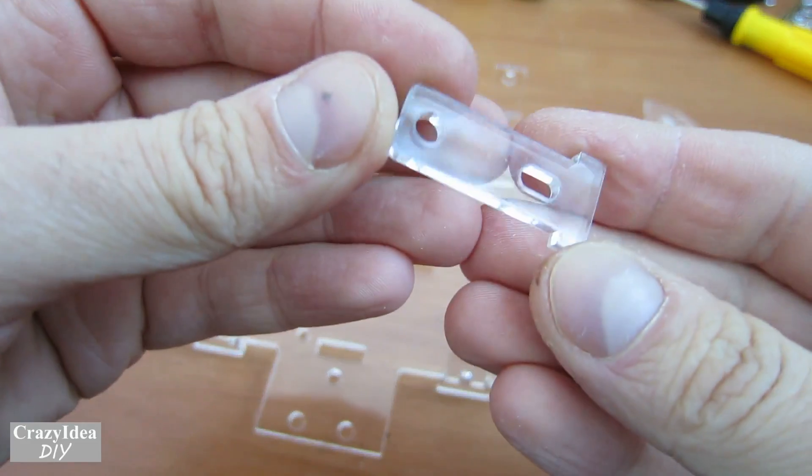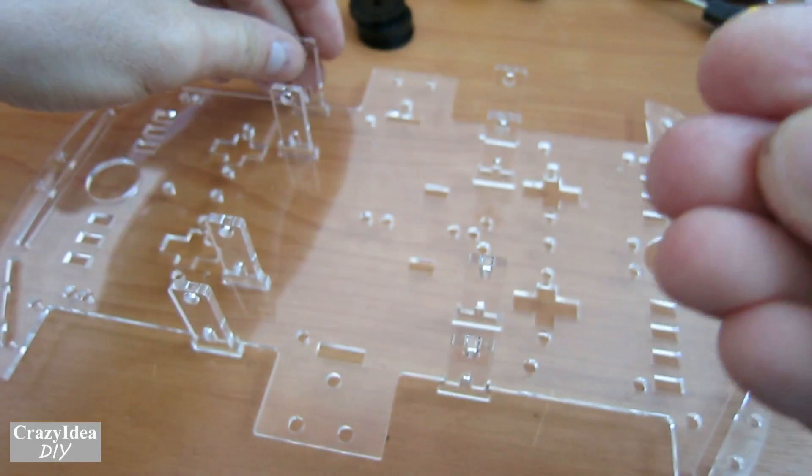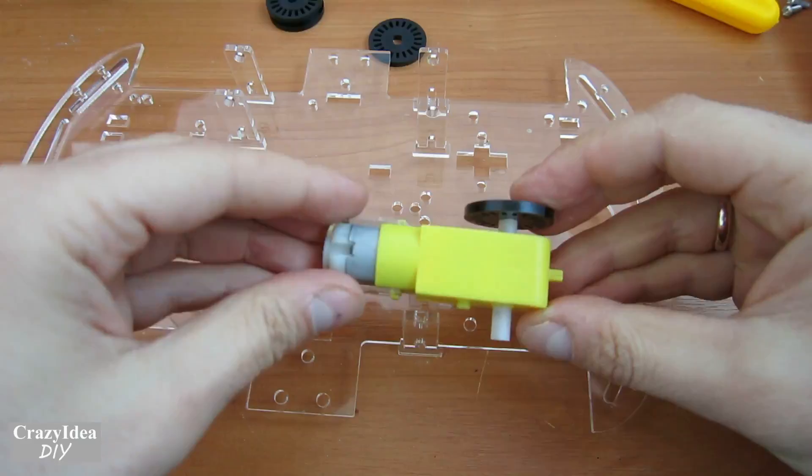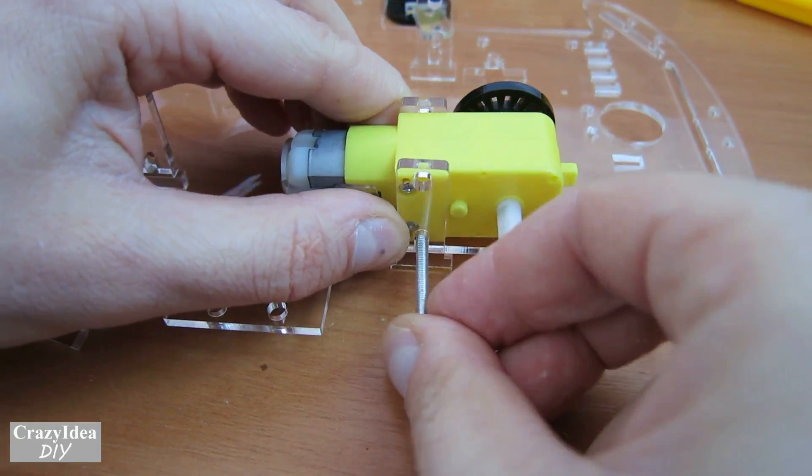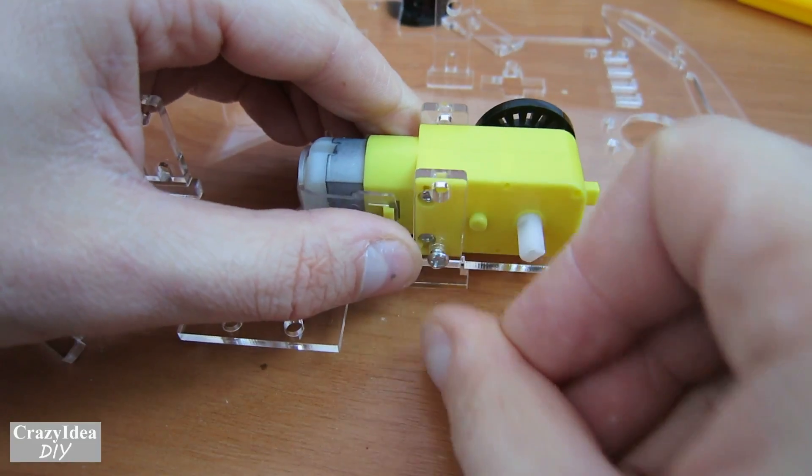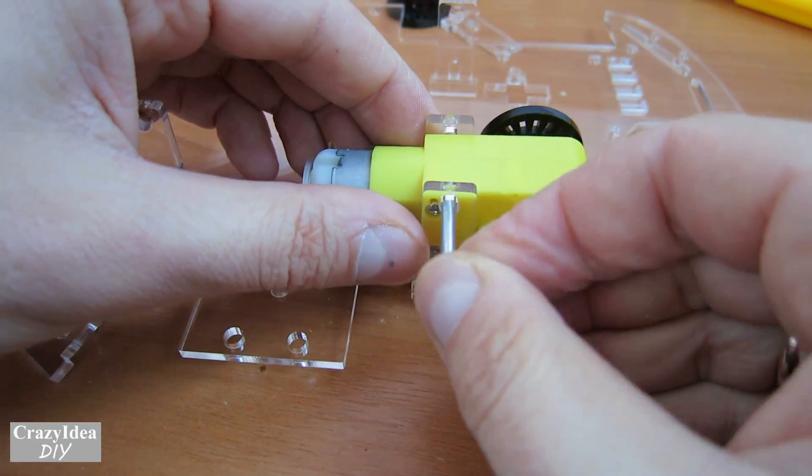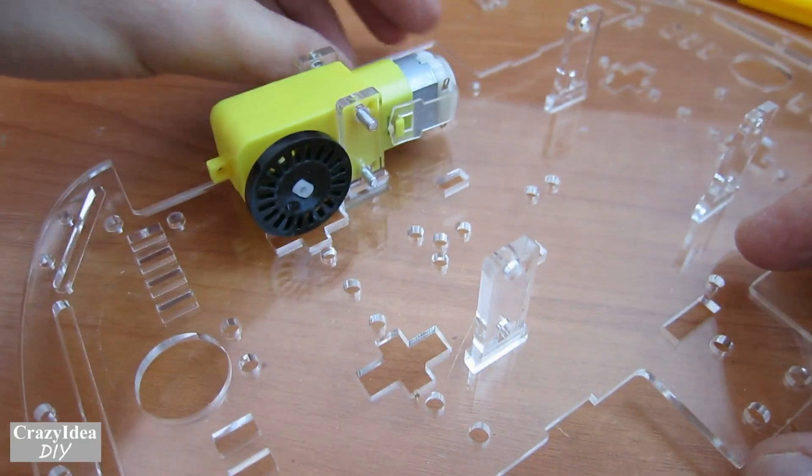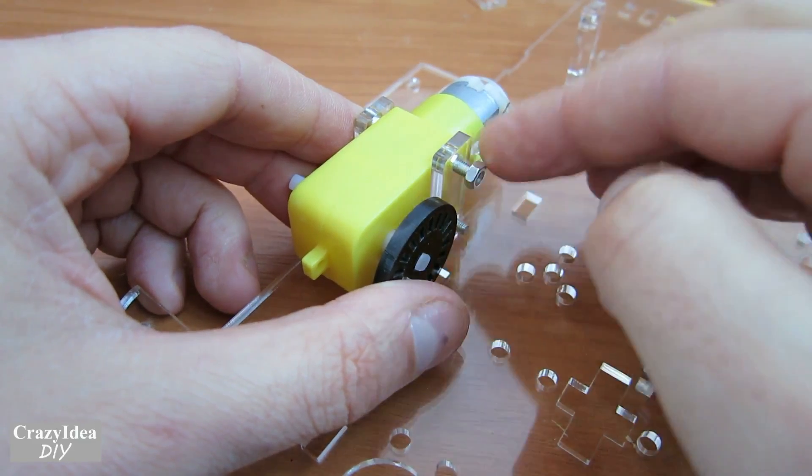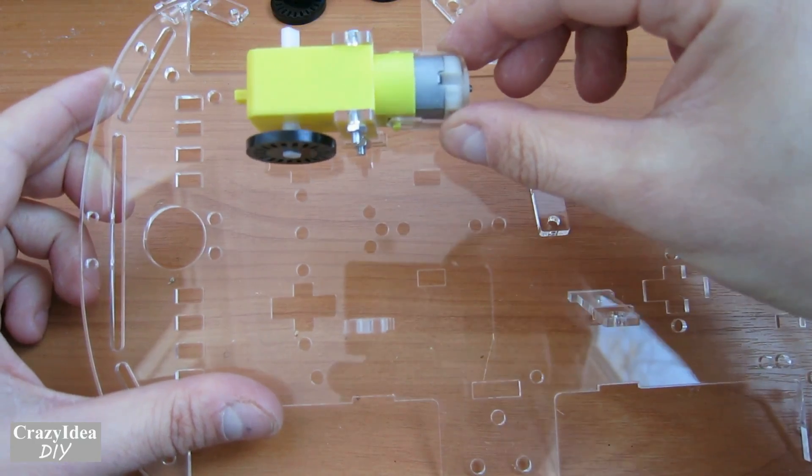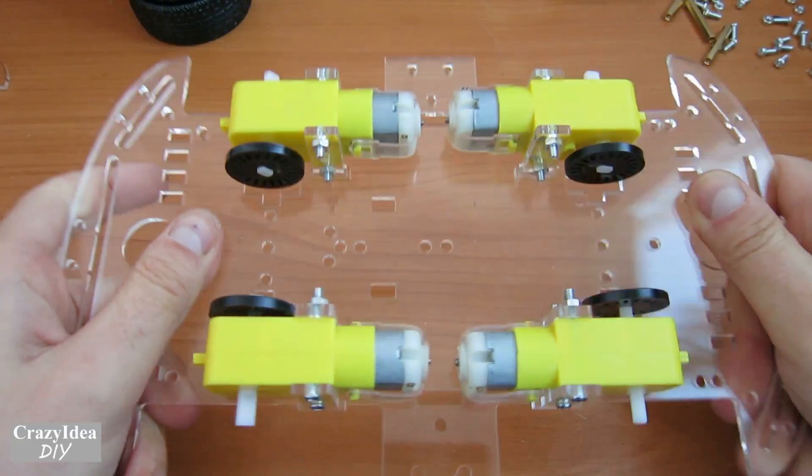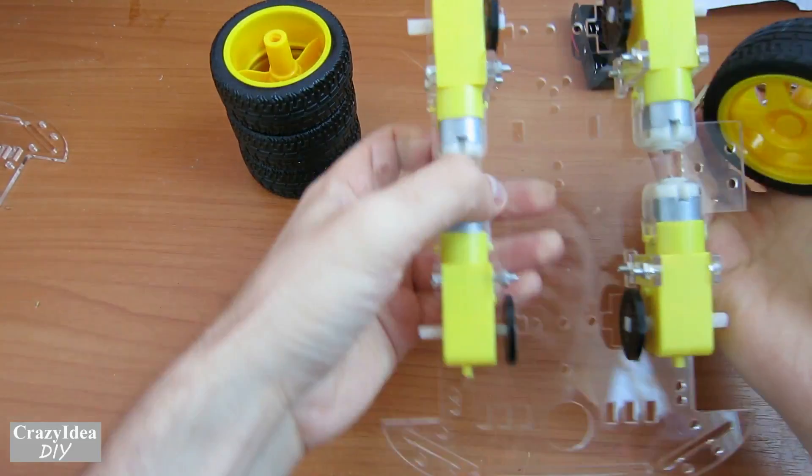First of all, we assemble these details. Repeat this three more times. That should come out. Now we will set the wheels.